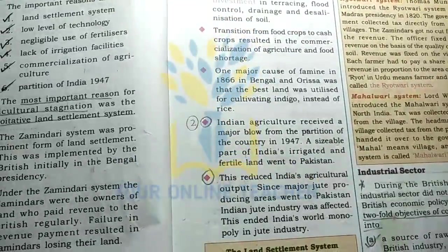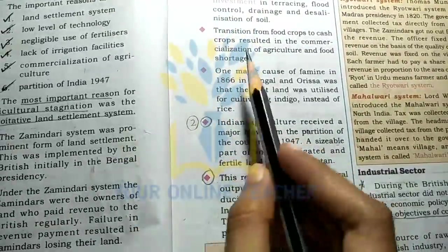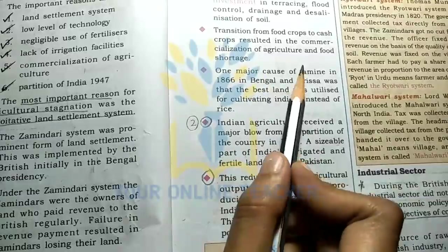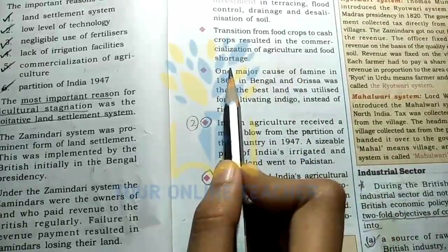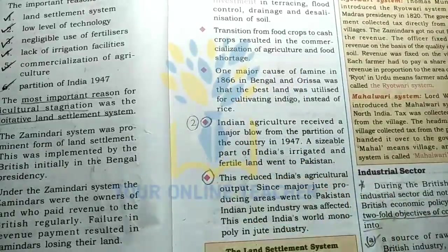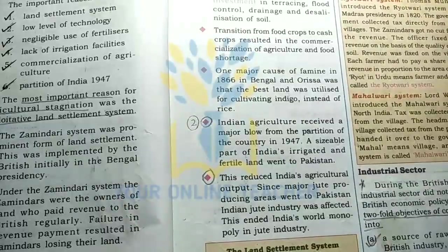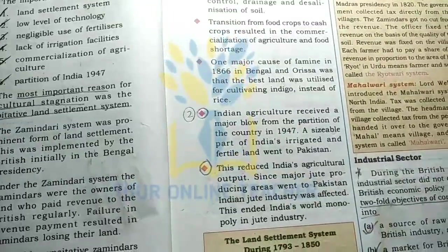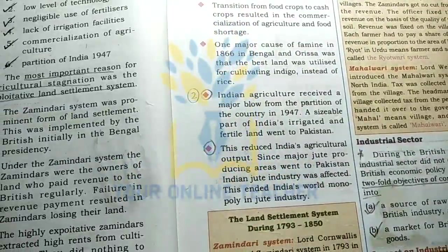The commercialization of agriculture led to food shortages, as land was diverted from food crops. This contributed to famines in regions like Bengal.